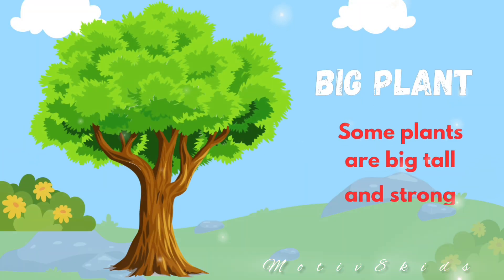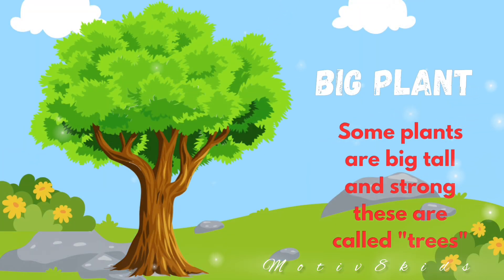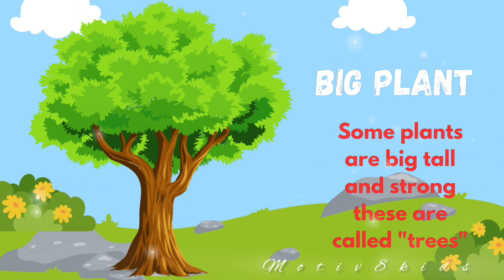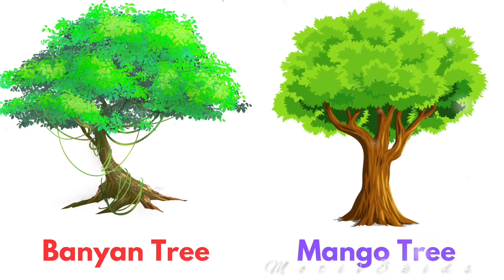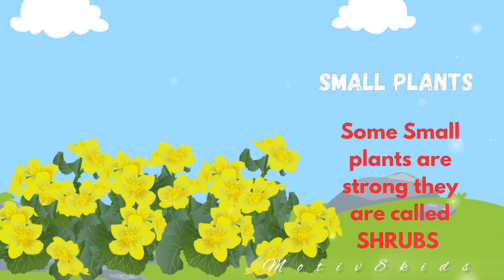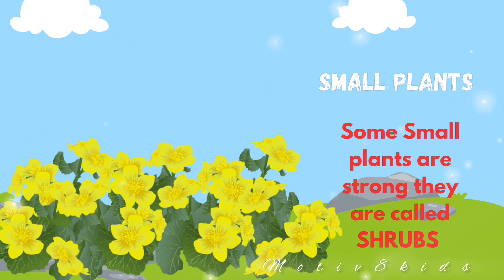The first type is big plants. Some plants are big, tall, and strong — these are called trees. Examples of trees are the banyan tree and the mango tree. Some plants are small but strong — these are called shrubs. Examples of shrubs are the rose plant and the pea plant.